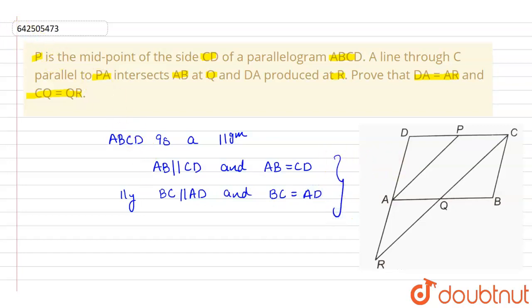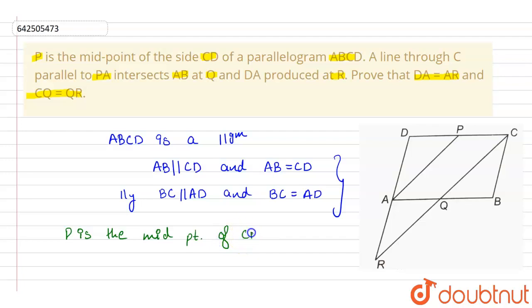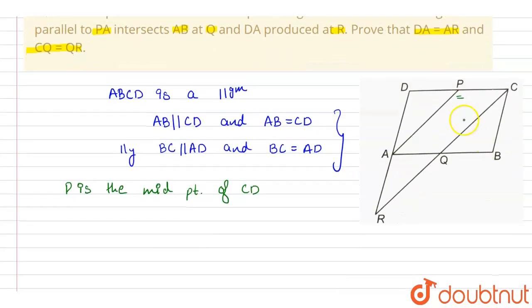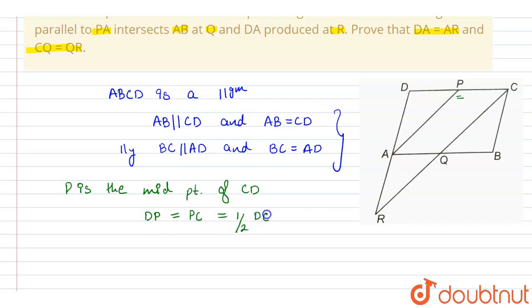It is given that P is the midpoint of CD. So if P is the midpoint of CD, then DP is equal to PC, which is also equal to half of DC.